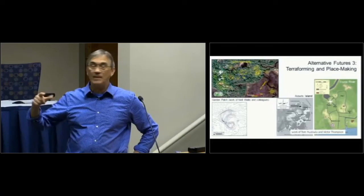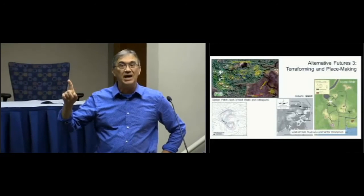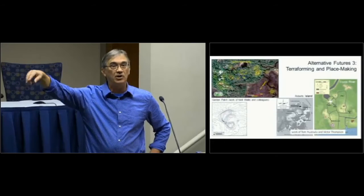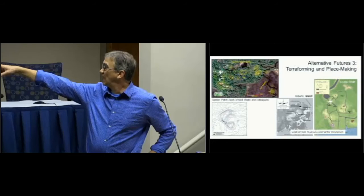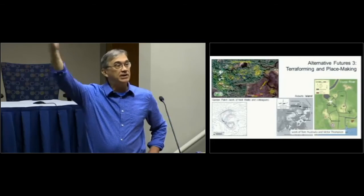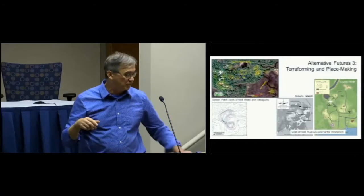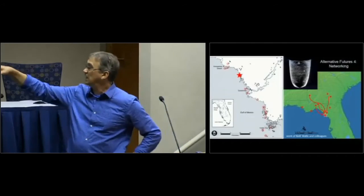The third one, terraforming and placemaking. When at AD 200, we get the establishment of the large civic ceremonial centers, they're sited back from the coast. Crystal River is seven kilometers back from the coastline. Garden Patches, three kilometers back from the coastline. Shell Mound, not so much, but at least they're on a dune, so they go up higher there. So these are places where investments and infrastructure were made that were huge, but they did it in places that were much more secure at the time.